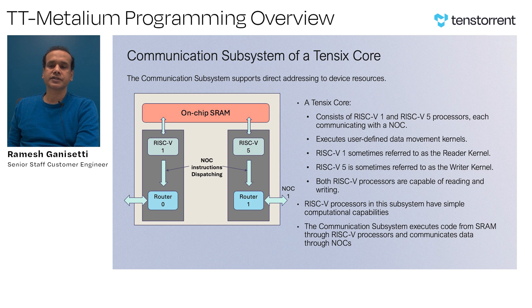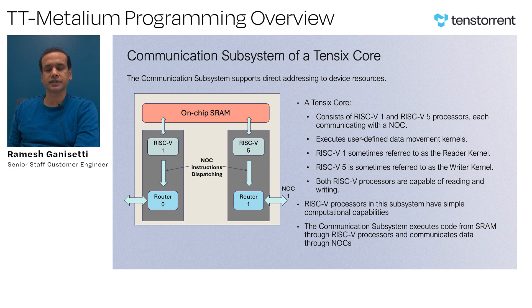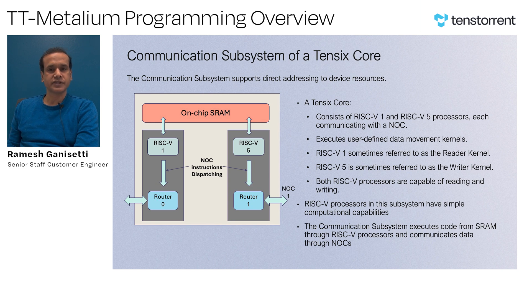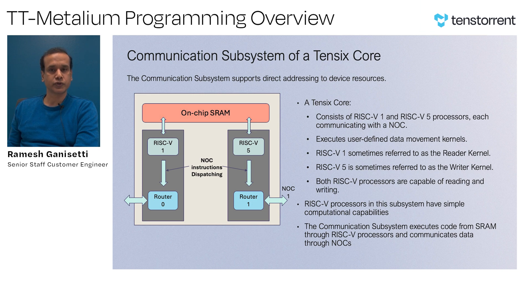Let's look at the communication subsystem of the Tensix core. RISC-V1 and RISC-V5 cores are responsible for executing data movement kernels from the SRAM. RISC-V1 is usually used as the reader core, and RISC-V5 is used as the writer core, but both of these cores have the functionality to read as well as write. These two cores execute instructions from the SRAM and then communicate with other cores through the NOC.